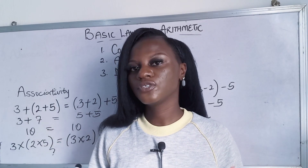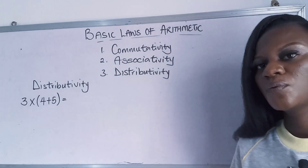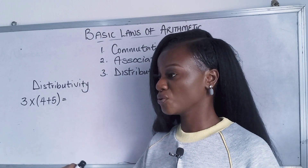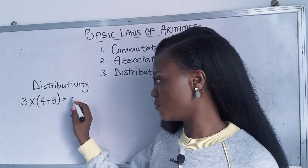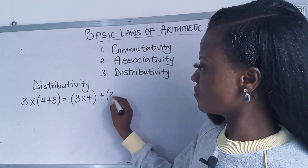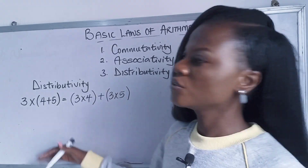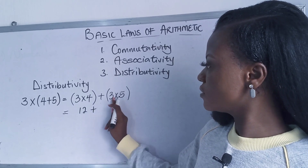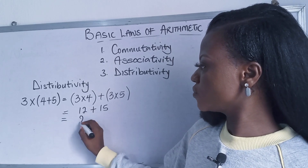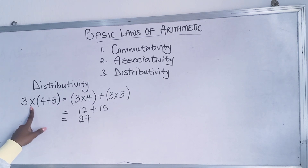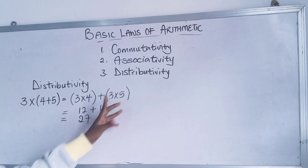Now let's go to the distributive rule. The distributive rule is about opening a bracket by multiplying. For example, 3 times (4 plus 5) means you multiply 3 by everything in the bracket: 3 times 4 plus 3 times 5. That gives 12 plus 15, which equals 27. This is called multiplication being distributed over addition — you multiply each term inside the bracket.